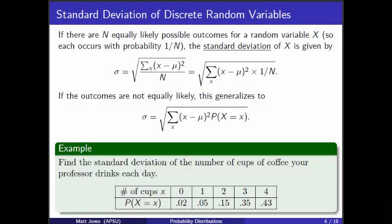We've already talked about means of random variables. It turns out random variables also have standard deviations. The way we want to think about this is that we're using random variables to model the behavior of populations — think about taking one draw from a population. The random variable models the behavior of that one draw, so it's like taking a sample of size 1. Random variables have means, and they also have standard deviations. Their standard deviations are the same as the population standard deviations.